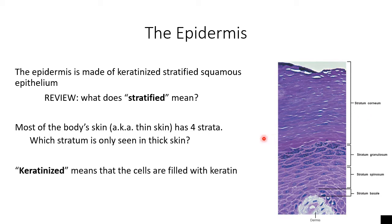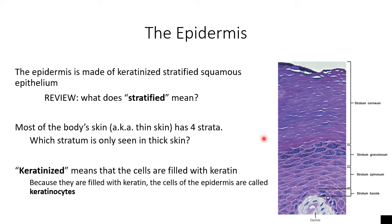Any of the cells that we see in the epidermis are what we call keratinocytes. Keratinocytes are cells that are full of the protein keratin. The farther these cells get from stratum basale — because they're just growing and pushing themselves up — the more keratin that we have present. Keratinized stratified squamous epithelium is a description of the layers of cells and how much keratin they have inside of them.